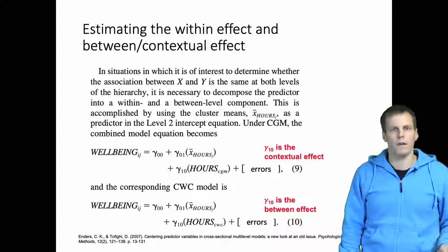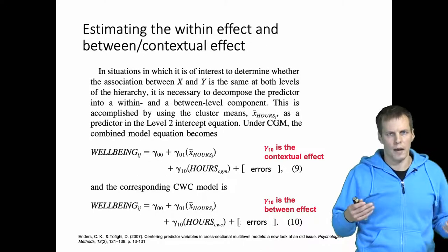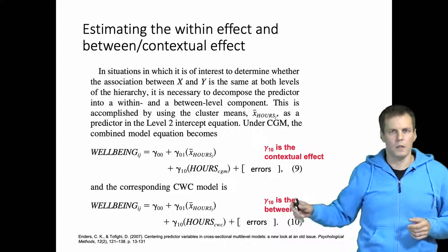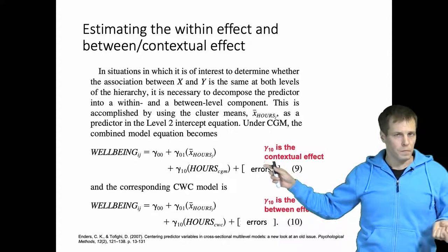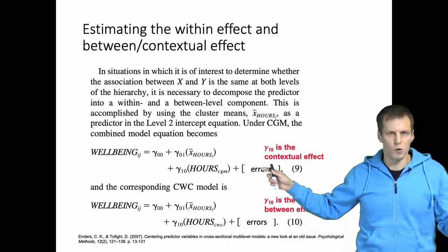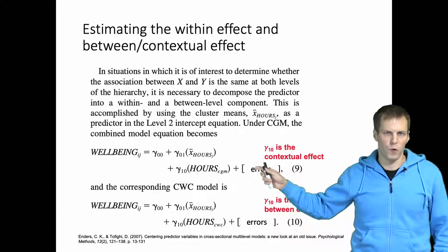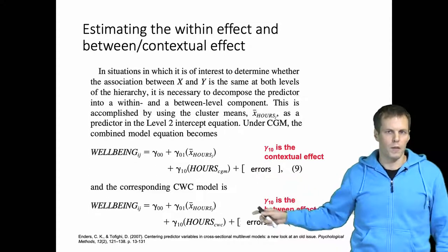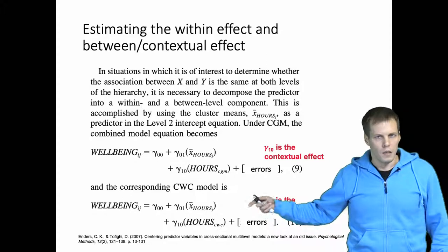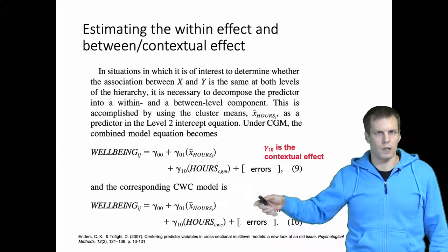The contextual effect is a bit easier to understand than the between effect, so grand mean centering or no centering at all combined with cluster means is probably more useful for most people than applying cluster mean centering and then adding the cluster means.